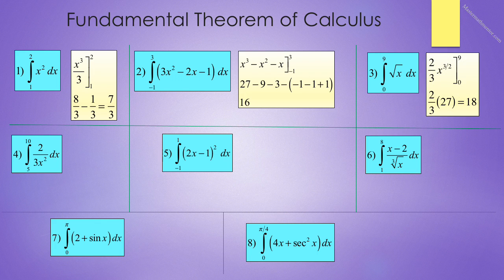Number 3 reads the integral from negative 1 to 9 of the square root of x dx. We write the square root of x as x to the 1 half and integrate and get 2 thirds x to the 3 halves evaluated from 0 to 9. And that becomes 2 thirds times 27, or 18.